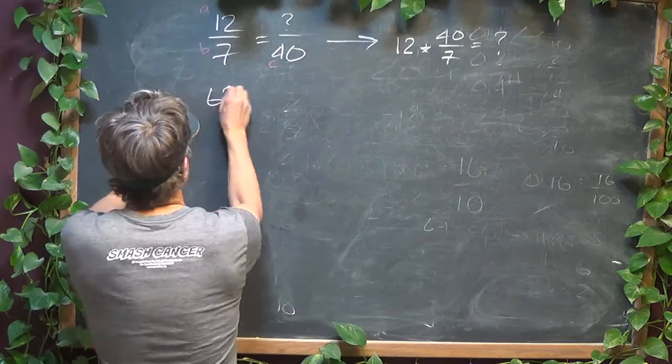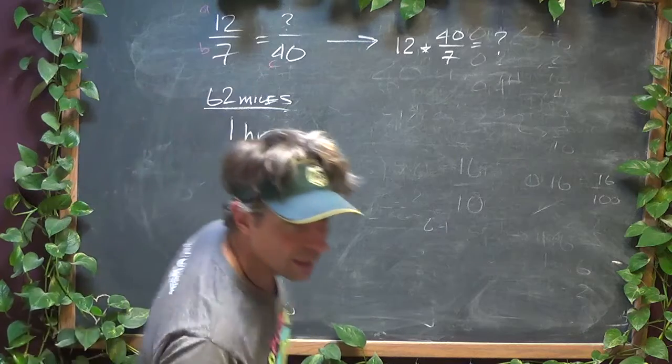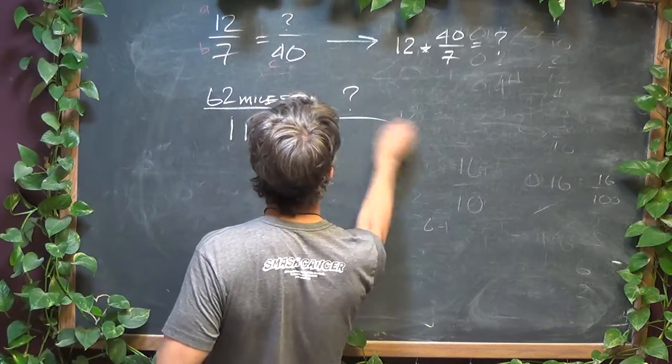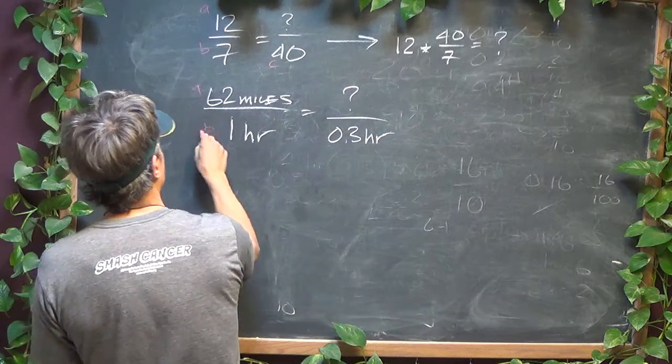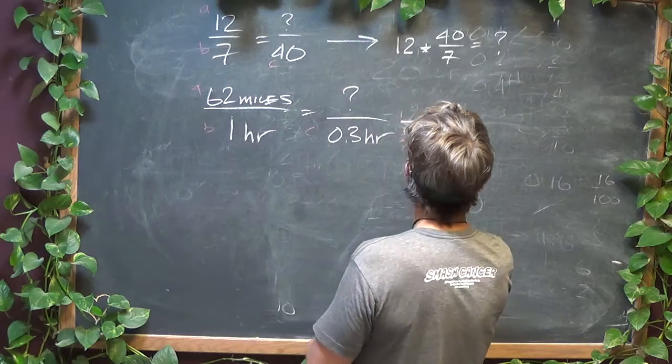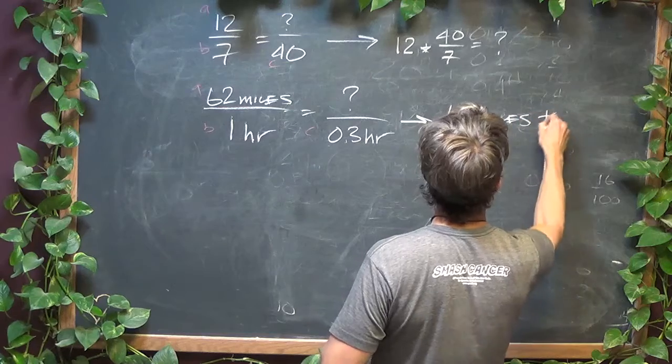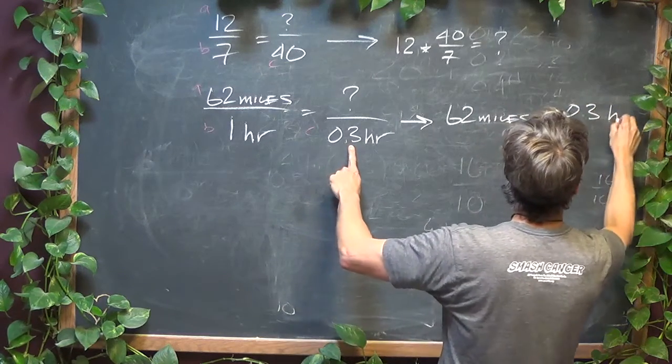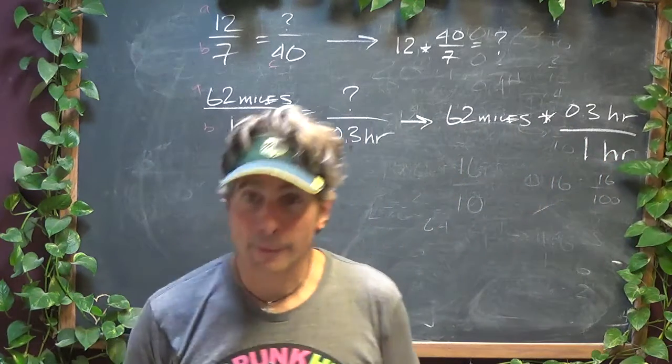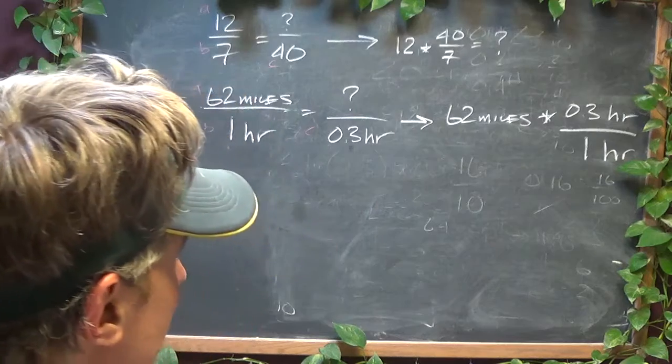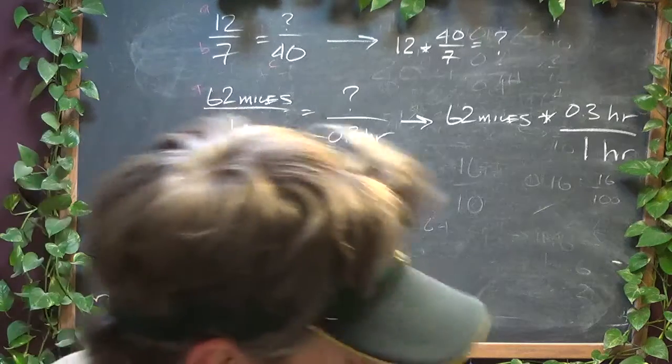62 miles an hour is how many miles in three-tenths of an hour? Again, ABC. So you end up with 62 miles times three-tenths of an hour over one hour, which is actually nice that it's one hour.